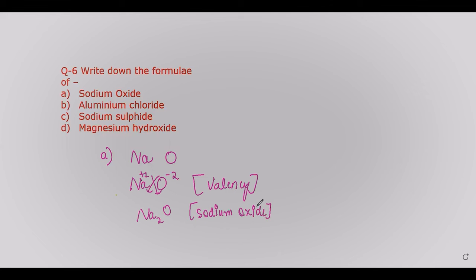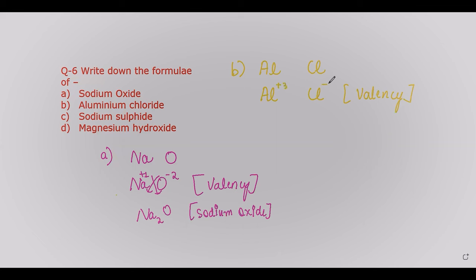For aluminium chloride: write the symbols — aluminium (Al) and chloride (Cl). Add valencies: aluminium has +3, chlorine has −1. After cross-multiplying, the chemical formula becomes AlCl₃, which is aluminium chloride.